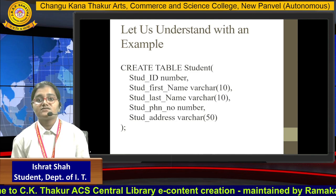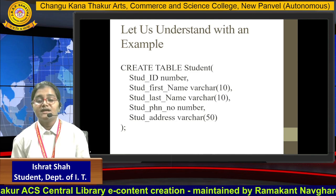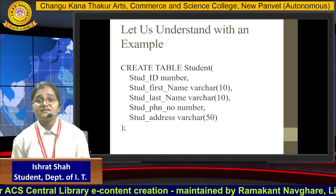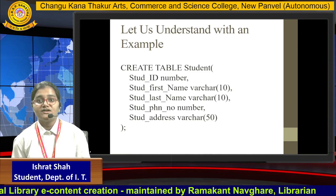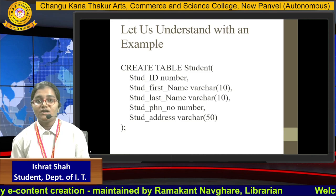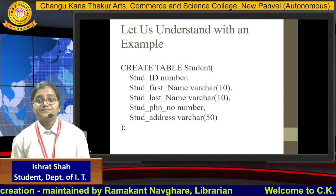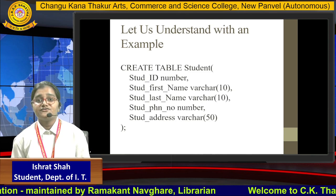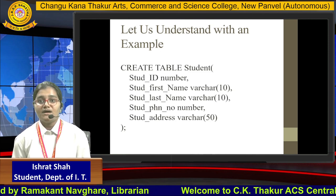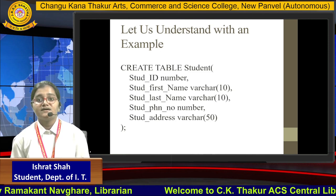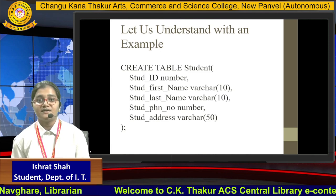The first column is student ID and its data type is NUMBER. It allows us to enter only number values inside our column. It is important to give the data type along with the column name. Next we give a comma to tell the database that column 1 is completed.